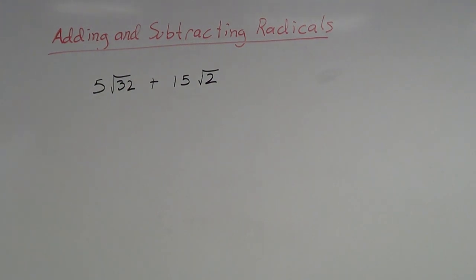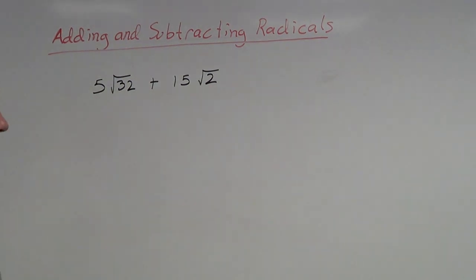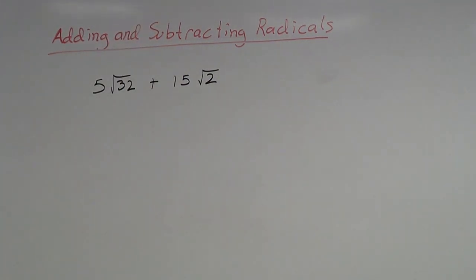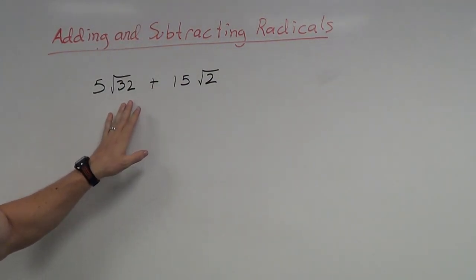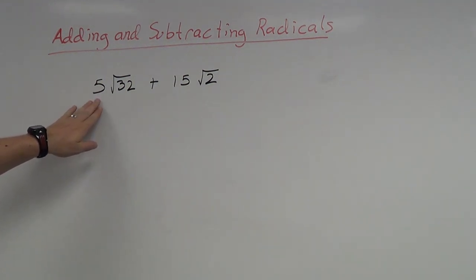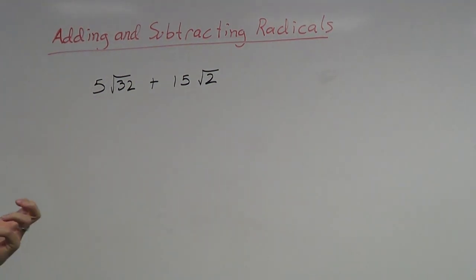One more example: 5 root 32 plus 15 root 2. To combine these I need the same radical, but root 32 and root 2 are different. The square root of 2 is already fully simplified, but root 32 can be simplified further. The 5 out front just gets carried along through the simplification — it won't cause trouble.